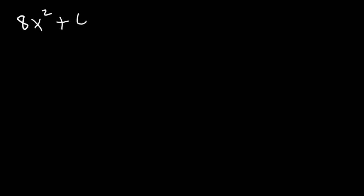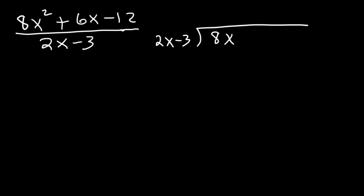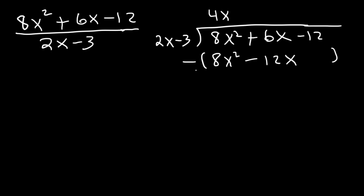Now let's divide 8x squared plus 6x minus 12 by 2x minus 3. We can't usefully separate it into smaller fractions when there are two or more terms in the denominator — instead we use long division. Put the numerator on the inside and the denominator on the outside. 8x squared divided by 2x is 4x. Multiply: 4x times 2x is 8x squared, and 4x times negative 3 is negative 12x. Then subtract. The process is always: divide, multiply, and then subtract.